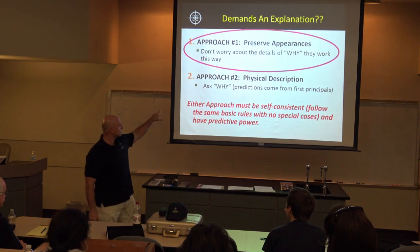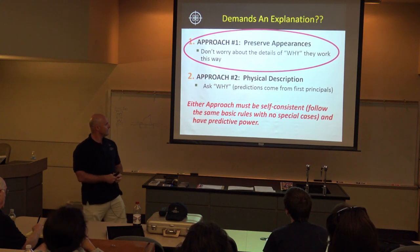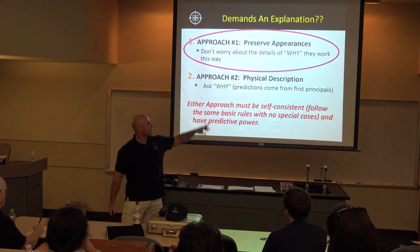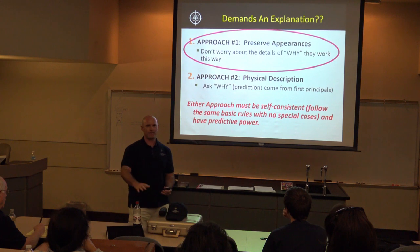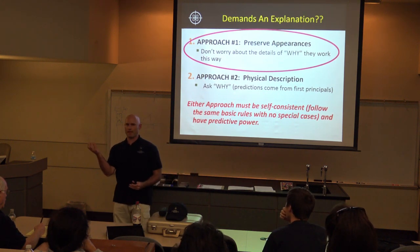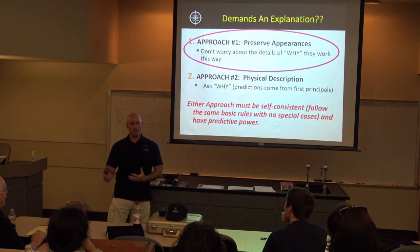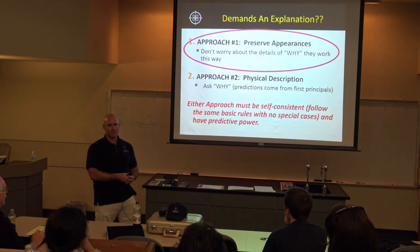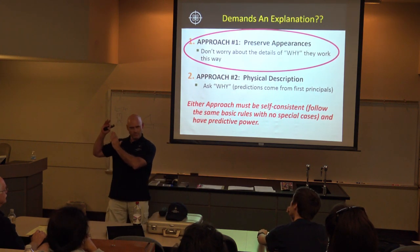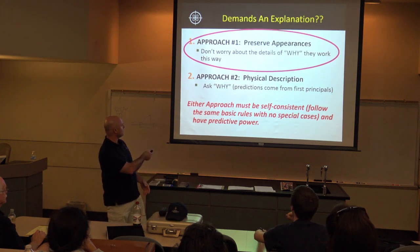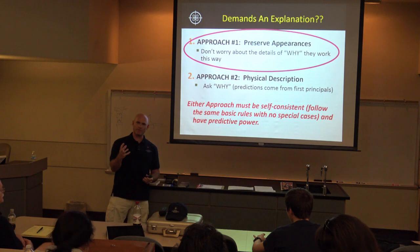There are basically two approaches to modeling the heavens: number one, preserve appearances; number two, get to the underlying physical description. For thousands of years the approach was to preserve appearances — don't worry about why, don't worry about the underlying physical laws, just come up with a model that works. Tonight we take a step forward from that old approach toward the underlying physical laws that govern the universe.